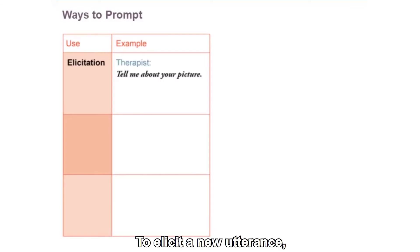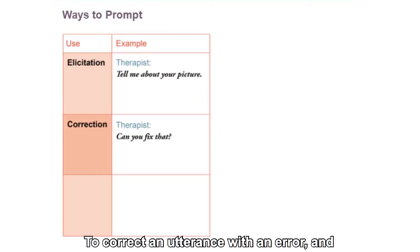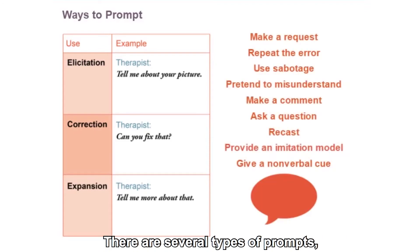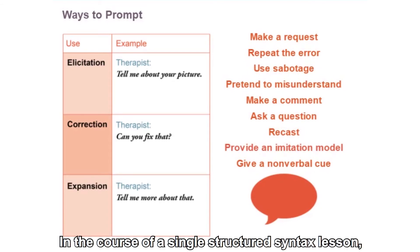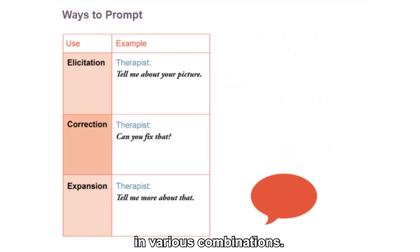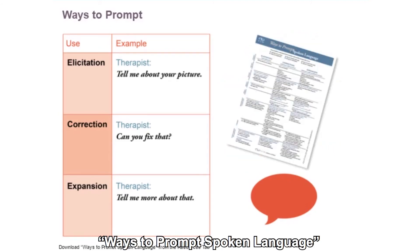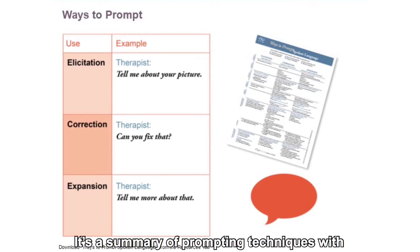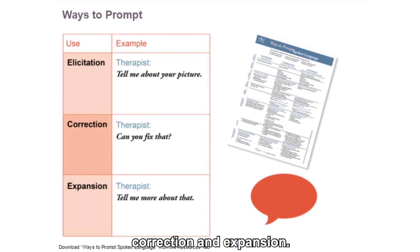You can use prompts in three ways: to elicit a new utterance, to correct an utterance with an error, and to expand an utterance with insufficient detail. There are several types of prompts, both verbal and nonverbal. In the course of a single structured syntax lesson, you'll probably use many of these in various combinations. Download the document, Ways to Prompt Spoken Language, from the Resources tab as a helpful reference. It's a summary of prompting techniques, with examples of applying them to elicitation, correction, and expansion.